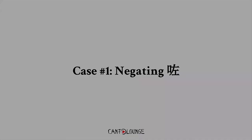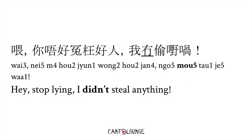Number 1 — negating 左. This is very important: when you negate 左, you have to drop the 左 afterwards. 左 goes with 無 when it comes to negation. For example, in this sentence: 喂,你唔好冤我好人喔,我無偷東西喔 — hey, stop lying, I didn't steal anything. If we had to change it back to the positive, it would be 我偷左嘢. But the negated version would be 無偷東西 — so just remember to drop the 左.